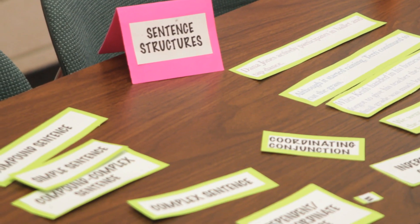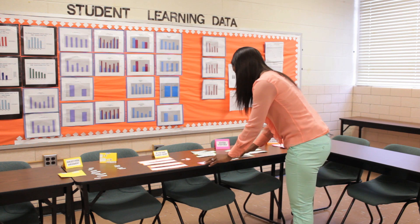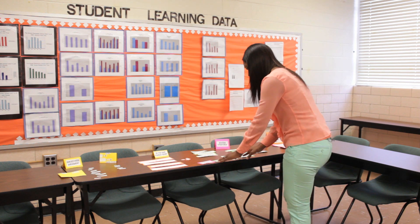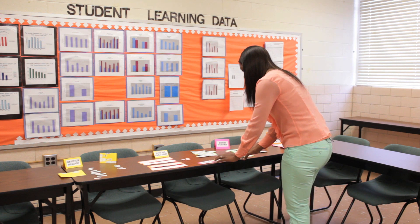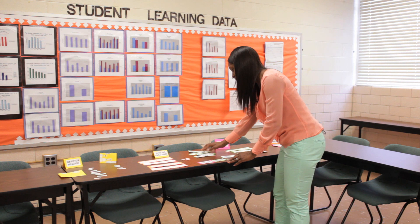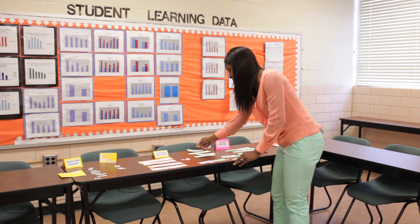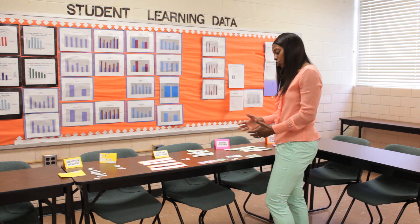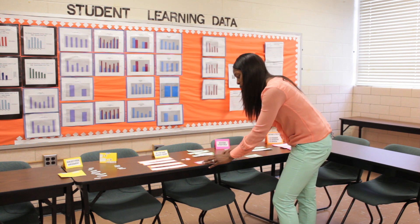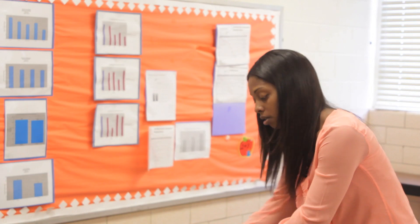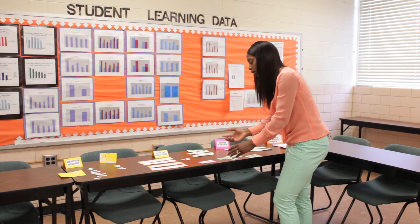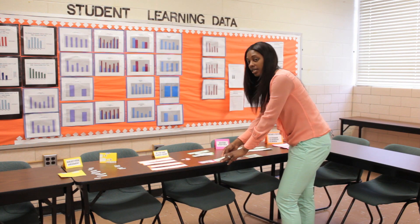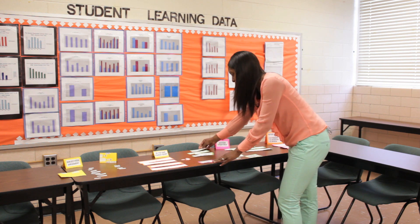This is one of my favorite games — the sentence structure game. This station has two games inside of it. What you want to do is label each sentence structure. We have four sentence structures, and you can allow your students to play around with how they would create a sentence structure. For example, you have an independent clause — we know that one independent clause equals a simple sentence, so they would align them as so.